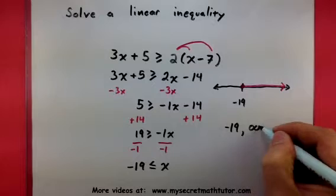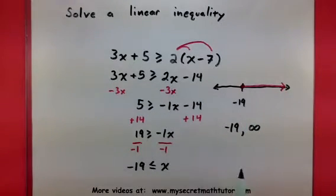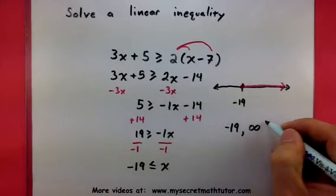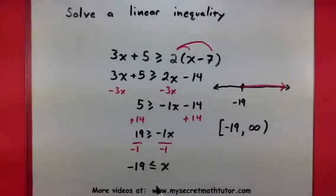So from the number line, I can see that anywhere between negative 19 all the way to infinity, my answer has to be between these two locations. And infinity is not a number, so don't include it. 19, include that one because it says or equals to. So here's a third way you could represent your answer.